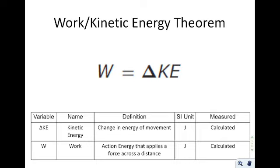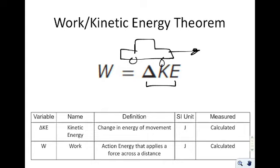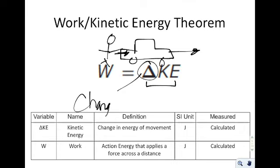The work must equal the change of another type of energy. Since the velocity increased, we say kinetic energy. This is called the work-kinetic energy theorem, because it deals specifically with kinetic energy. It says the amount of work you do equals the change in kinetic energy an object will have. Delta KE stands for the change in kinetic energy — any time you see delta, it means change. KE is an energy measured in joules and must be calculated, just like work.